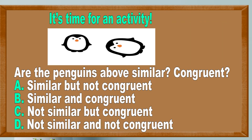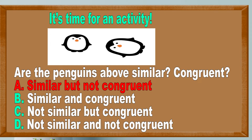Welcome back. We were tasked to identify whether the penguins are similar and congruent. The answer is that the penguins are similar but they are not congruent. The two penguins are similar because they have the same shape. They are not congruent because the penguin on the left is smaller than the penguin on the right.